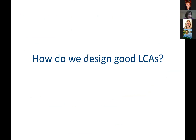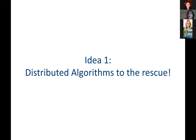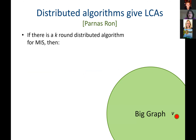What I want to talk about for the rest of the talk is how might we design good local computation algorithms. The first idea is we're going to use distributed algorithms — distributed algorithms come to the rescue. You may say I just said this isn't a distributed model, and that's kind of crazy because these local computation algorithms are very sequential. They don't get to talk to the other local computation algorithms. So why would distributed algorithms be helpful at all? To answer that, I need to explain what a distributed algorithm is.